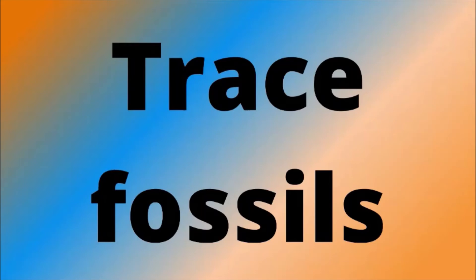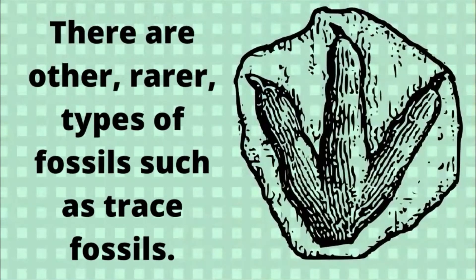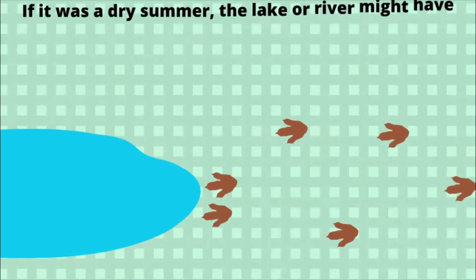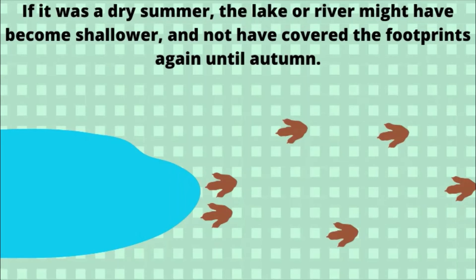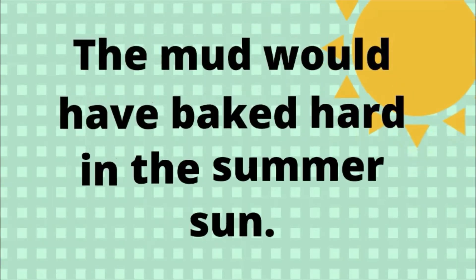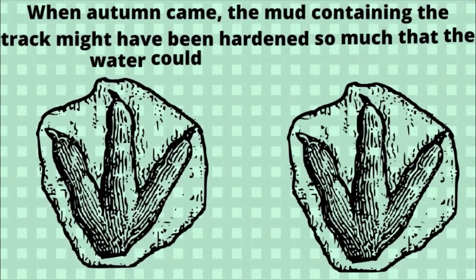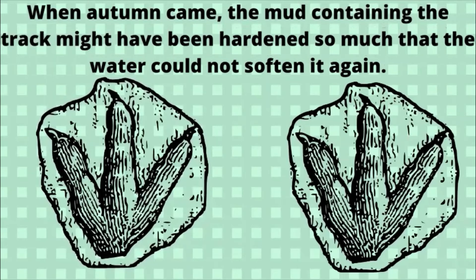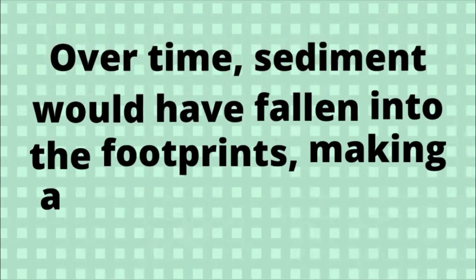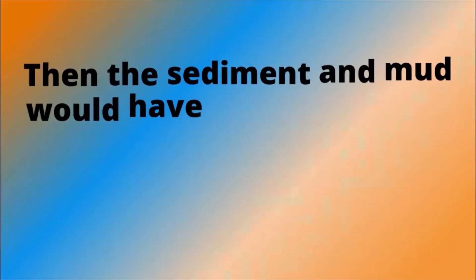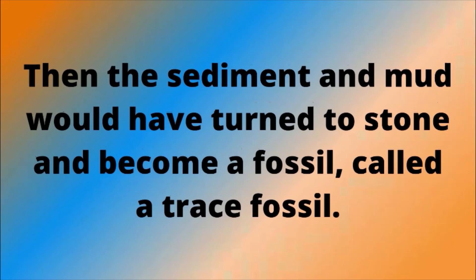Trace fossils. There are other, rarer types of fossils, such as trace fossils. When animals came to the banks of rivers and lakes to drink, they often left tracks in the soft mud at the edge of the water. If it was a dry summer, the lake or river might have become shallower, and not covered the prints again until autumn. The mud would have baked hard in the summer sun. When autumn came, the mud containing the track might have hardened so much that the water could not soften it again. Over time, sediment would have fallen into the footprints, making a separate new layer. Then the sediment and mud would have turned to stone and become a fossil, called the trace fossil.